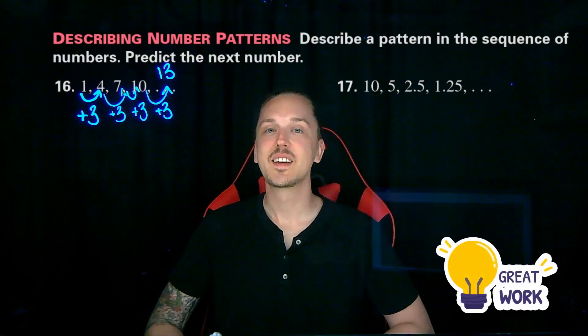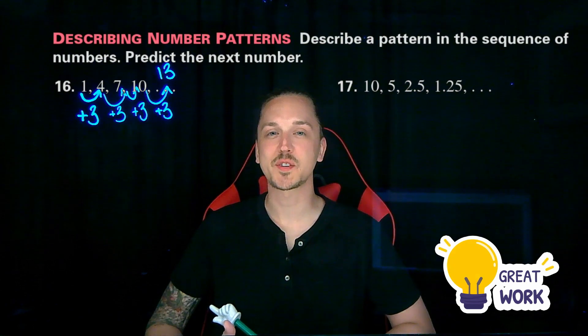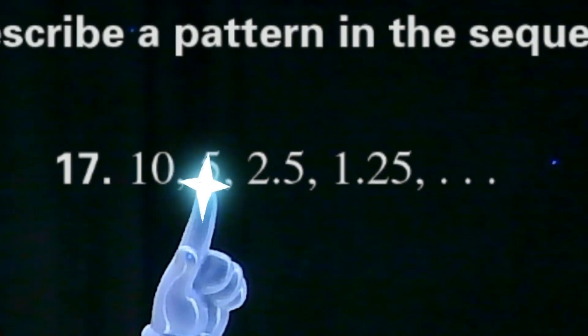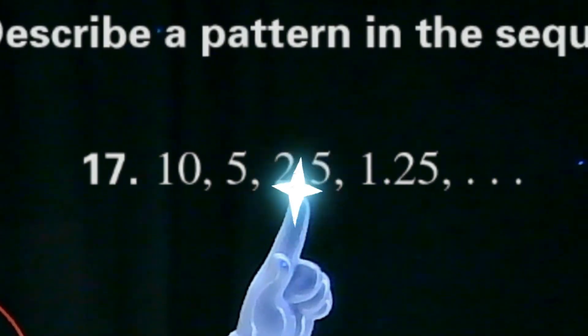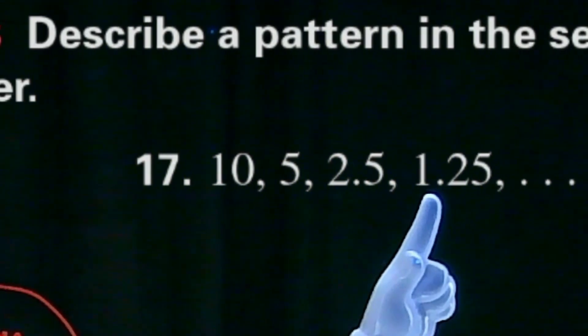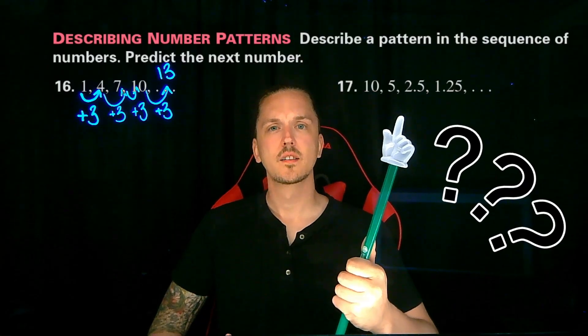Hey, nice work. What do you say we use that same thought process on number 17 here? From 10 to 5 to 2.5 to 1.25. What is the pattern here? Do you see the pattern?